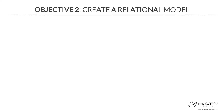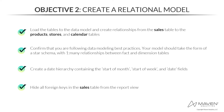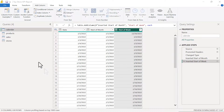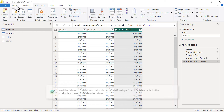Welcome to the second objective: creating the relational data model. This objective has four tasks. First, we'll load the tables to the data model and create relationships from the sales table to the product, stores, and calendar tables. Once connections are made, we'll confirm the model follows data modeling best practices — it should take the form of a star schema with one-to-many relationships between the fact and dimension tables. Third, we'll create a date hierarchy containing start of month, start of week, and the date fields. Fourth, we'll hide all foreign keys in the sales table from report view.